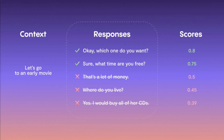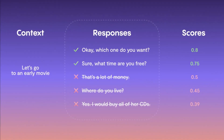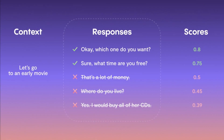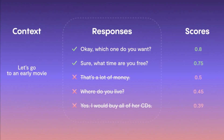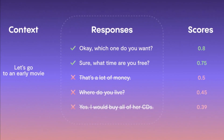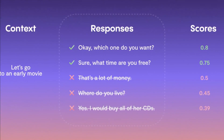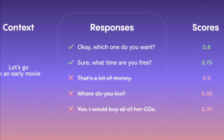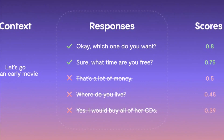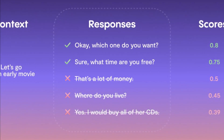Once the set of responses are generated, the retrieval model is responsible for finding the most relevant and appropriate response among a set of predefined and pre-moderated phrases. For example, if a user sends 'let's go to a movie,' two relevant responses would be 'okay, which one do you want?' and 'sure, what time are you free?' — while responses like 'that's a lot of money' or 'where do you live?' are not relevant.